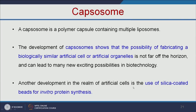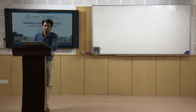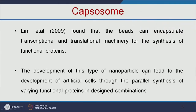Another development of artificial cells is the use of silica-coated beads for in vitro protein synthesis. Lim et al. found that beads can encapsulate transcriptional and translational machinery for the synthesis of functional proteins. These silica beads will have all the enzymes for transcription and translation. The development of this type of nanoparticle can lead to efficient artificial cell development.